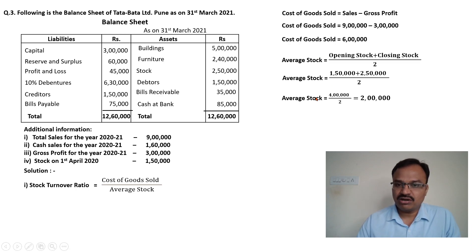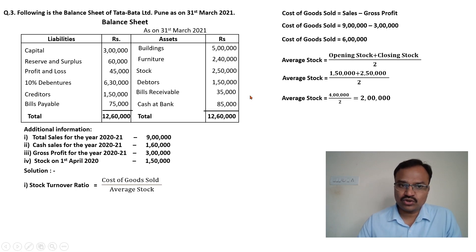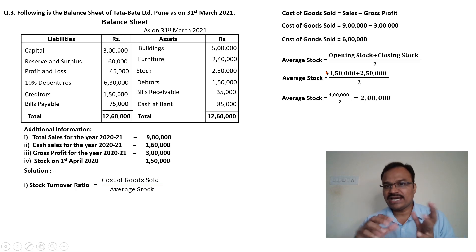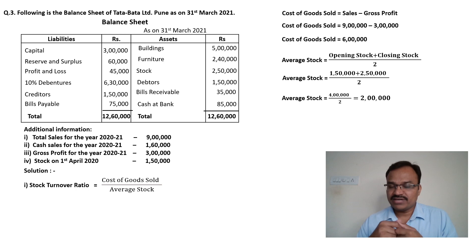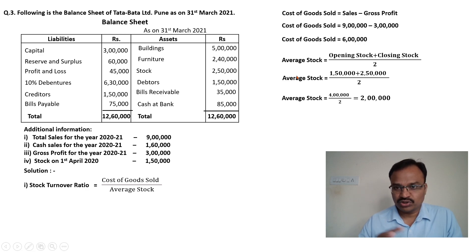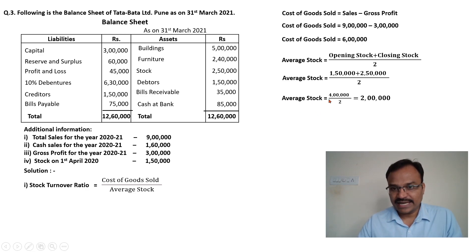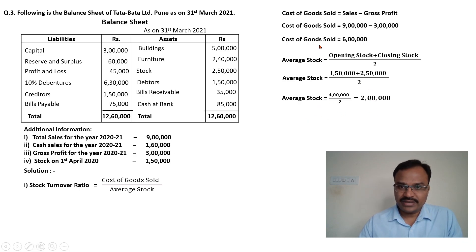See friends, if the opening stock is not available in the question, in that case we can take the closing stock as average stock. In order to calculate average stock we must have opening stock as well as closing stock, but if opening stock is not available, we can take closing stock as average stock. Here we have both, so average stock is 2 lakh rupees.